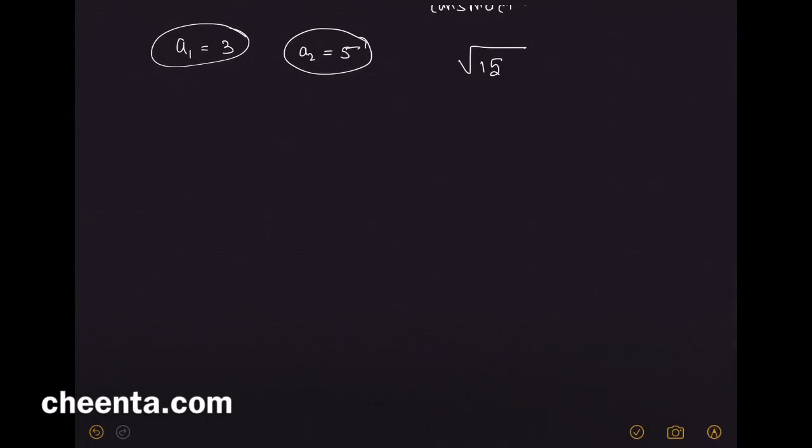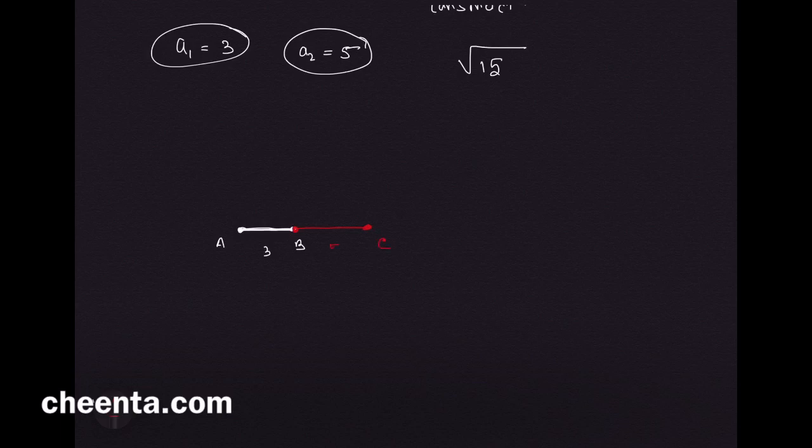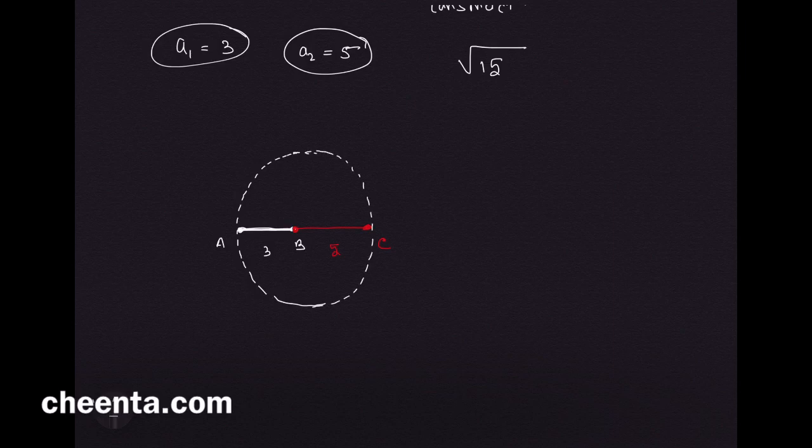This is how you can do it. Take a three unit long segment, let's call it AB, and take another segment that should be 5 units long. Let's call this C, 5 units long. Now take a circle like this, and this circle should have AC as the diameter.